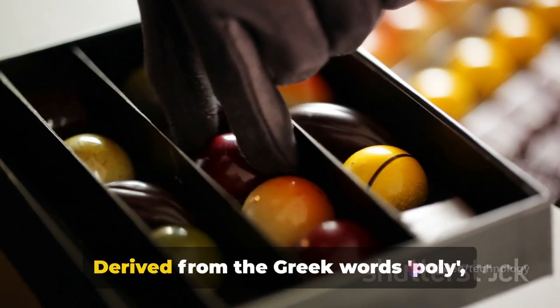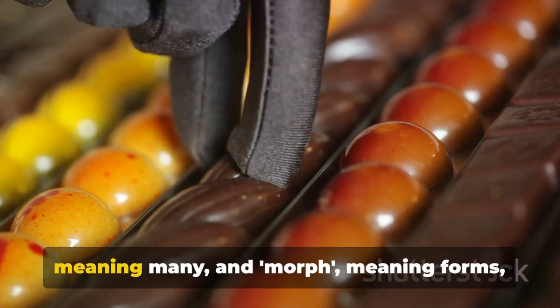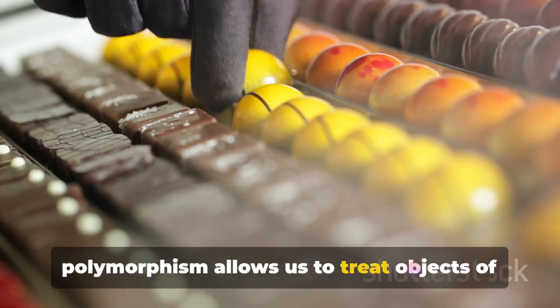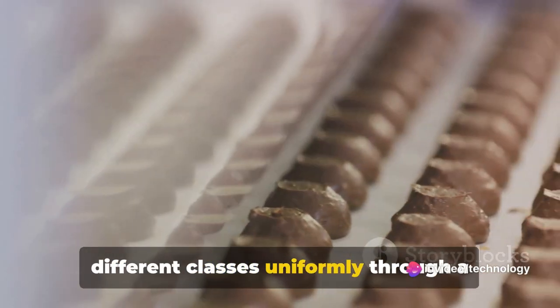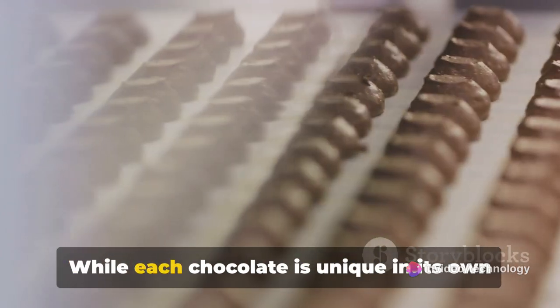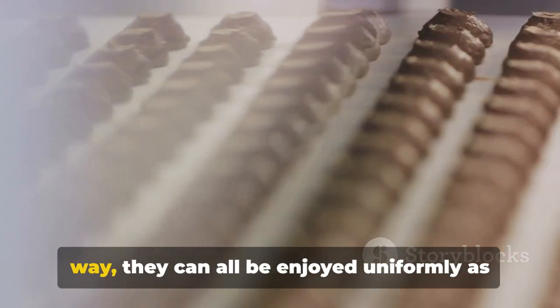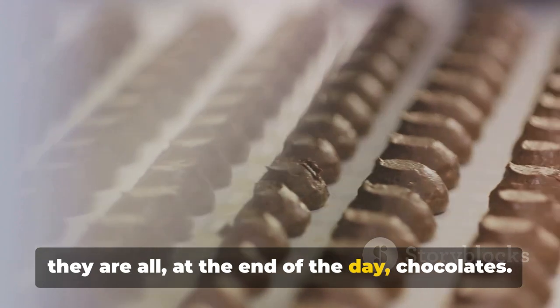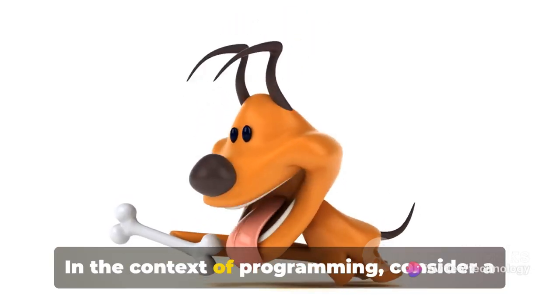Now, let's move on to polymorphism. Derived from the Greek words poly, meaning many, and morph, meaning forms, polymorphism allows us to treat objects of different classes uniformly through a common interface. It's like having a box of assorted chocolates. While each chocolate is unique in its own way, they can all be enjoyed uniformly as they are all, at the end of the day, chocolates.